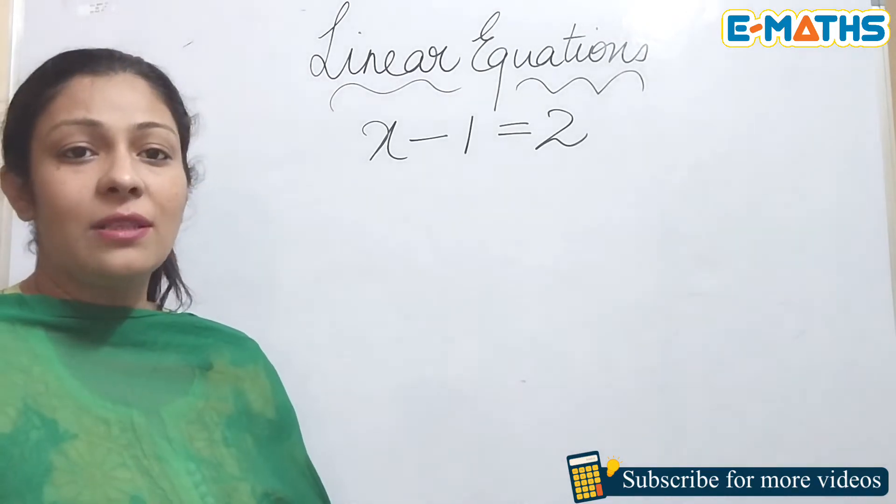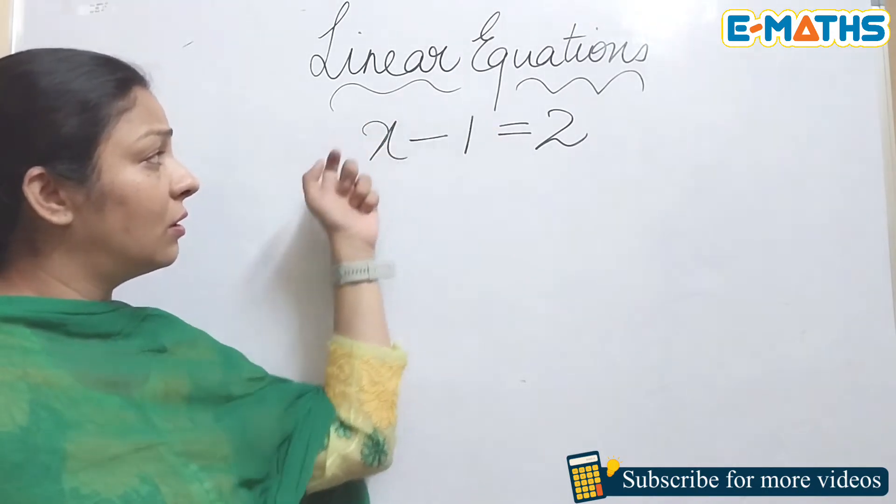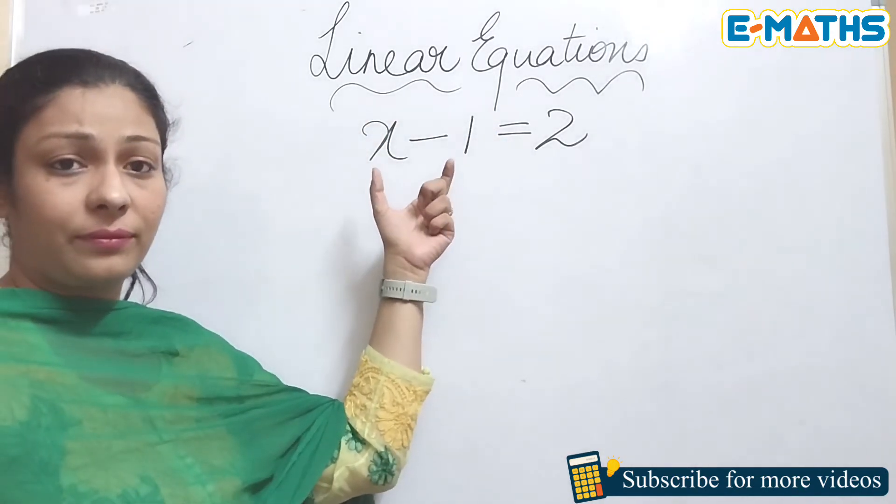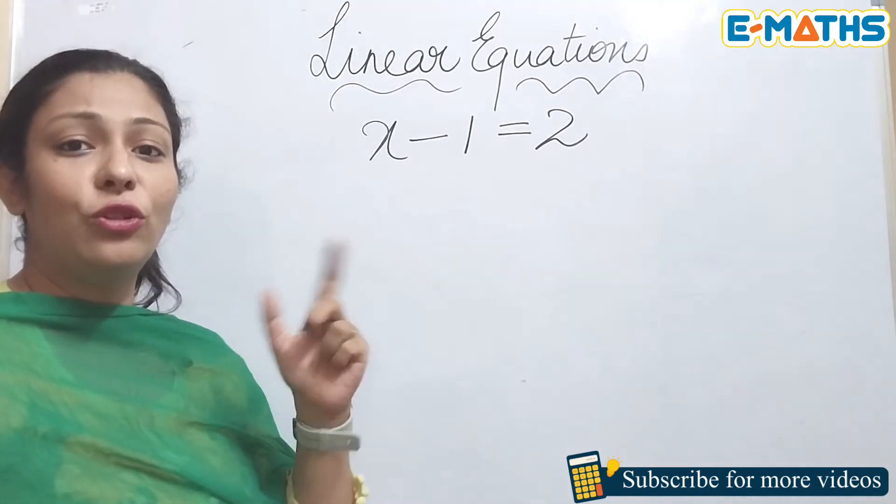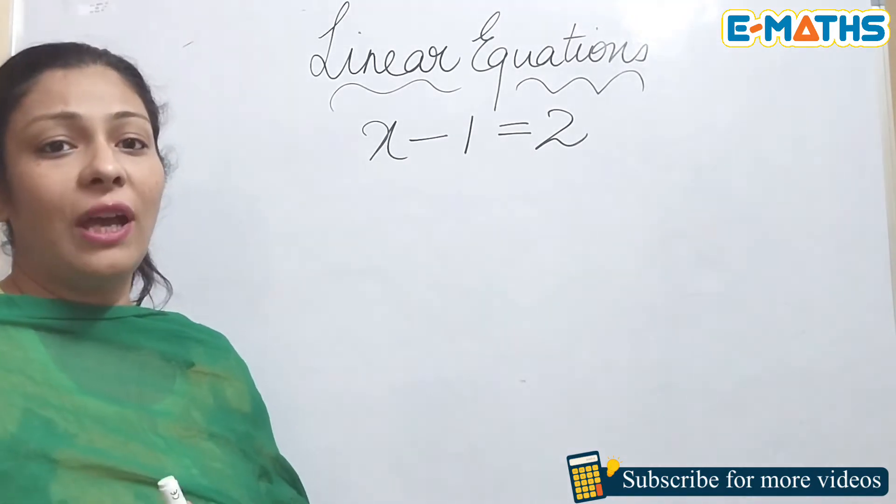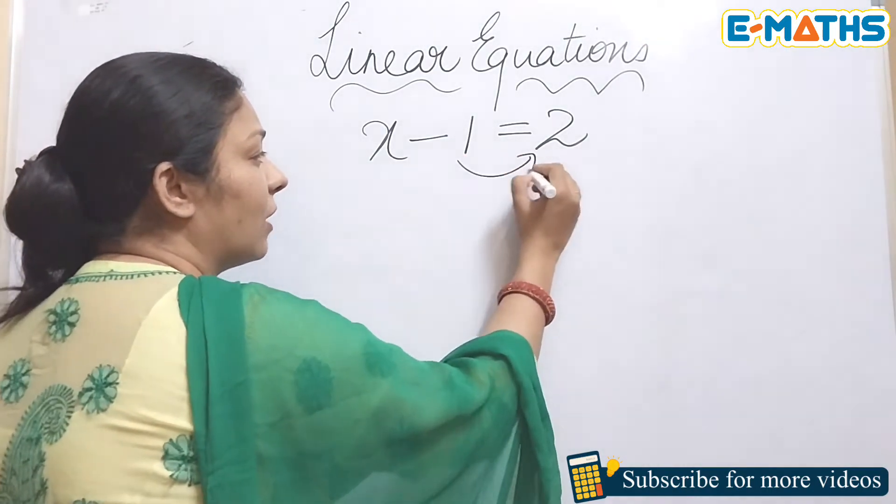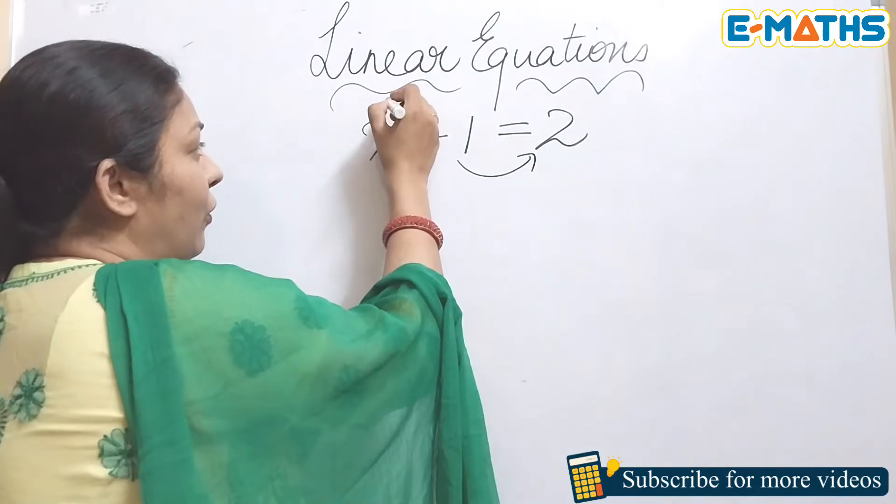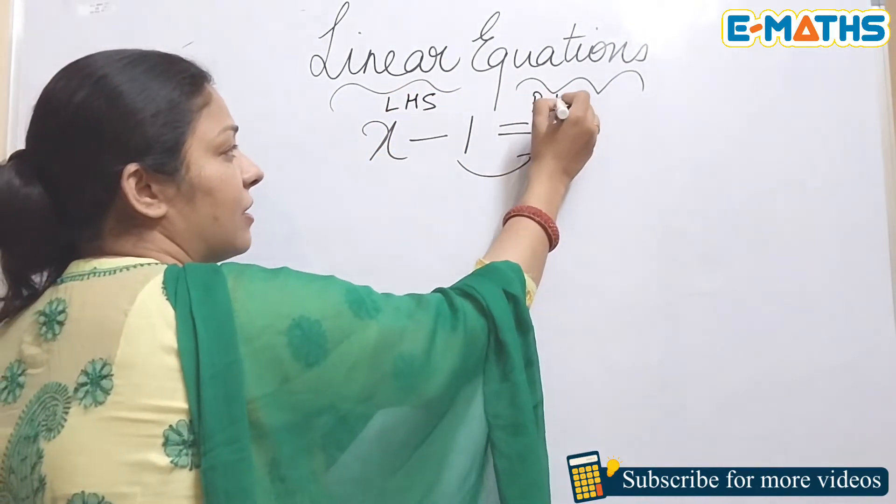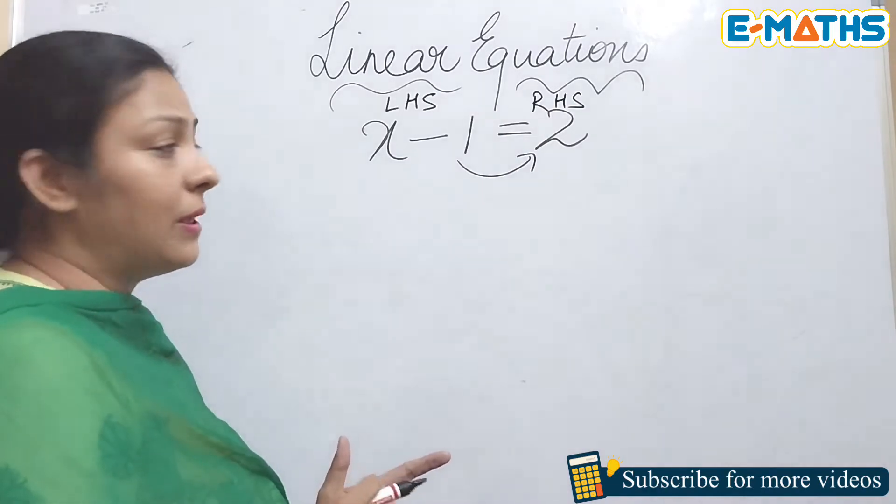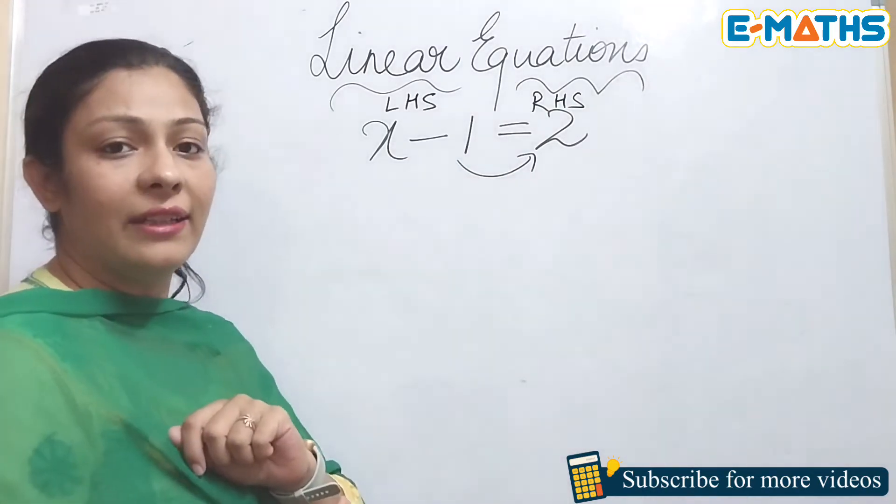Transposition means when you have to find the value of the unknown, you need to look around its expression. If you have a constant with it, you need to remove that. To remove that, we are going to transpose this to the other hand side. If you want, you can write LHS to this side and RHS to this side, which means this is the left hand side and this is the right hand side.